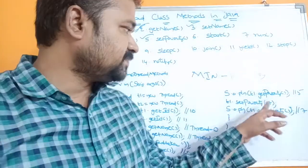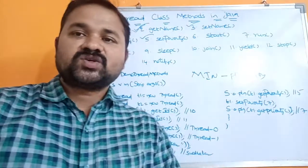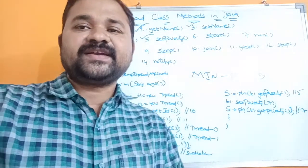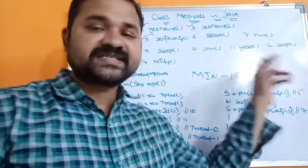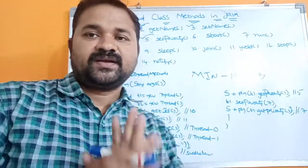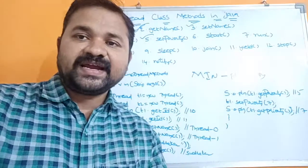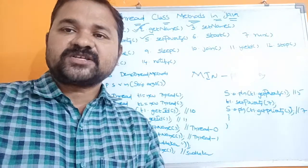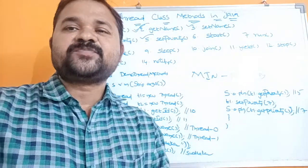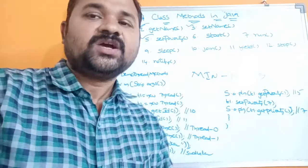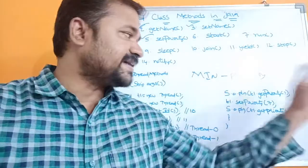Let's see the example: System.out.println(t1.getPriority()). What is the normal priority for a thread? The normal priority is 5, so we will get 5 as the output. Similarly if we display t2.getPriority(), we will also get 5 as the output, because 5 is the normal priority of the thread. Whenever we display getPriority() using a thread object, we will get 5 as the output.